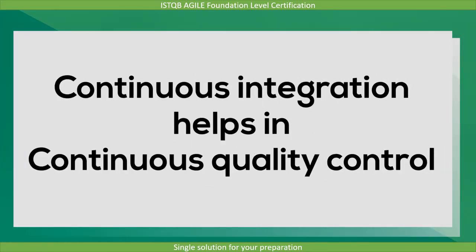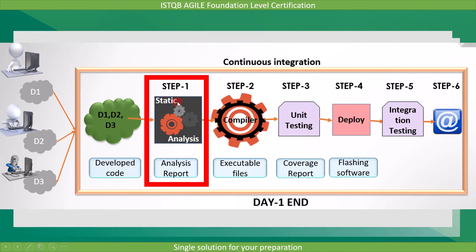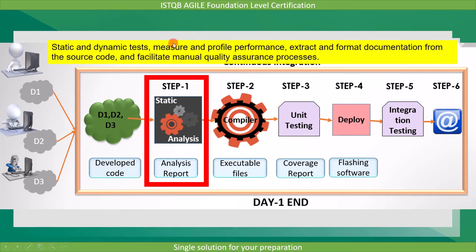Continuous integration also helps in continuous quality control. In addition to automated tests, organizations using continuous integration typically use build tools to implement continuous quality control. In addition to running unit and integration tests, such tools can run additional static and dynamic tests, measure and profile performance, extract and format documentation from the source code, and facilitate manual quality assurance processes. This continuous application of quality control aims to improve the quality of the product as well as reduce the time taken to deliver it, by replacing the traditional practice of applying quality control only after completing all development.